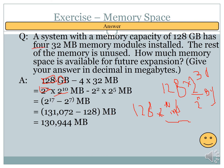Now we subtract 4 × 32 megabytes. Since 32 = 2⁵ and 4 = 2², that is 2² × 2⁵ = 2⁷ megabytes used. We calculate 2¹⁷ − 2⁷ megabytes, which gives 130,944 megabytes remaining — that is the memory available for future expansion.